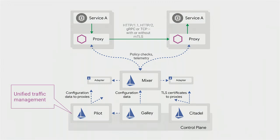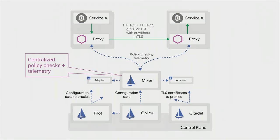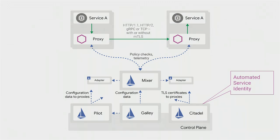Istio has a somewhat complex architecture with multiple control plane components managing a set of Envoy proxies. The control plane consists of Pilot, Mixer, Galley, and Citadel, which handle traffic management, telemetry policy, config ingestion, and certs and keys respectively. Up top are the Envoy proxies, which comprise the data plane. Istio provides unified traffic management, centralized policy checks, telemetry ingestion, custom adapters, and automated service identity — including mutual TLS with a single policy.